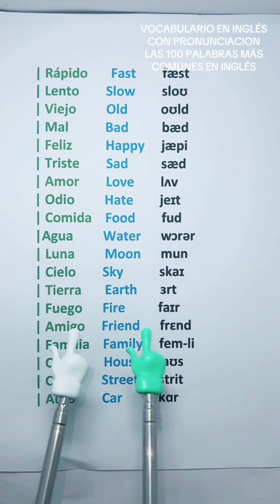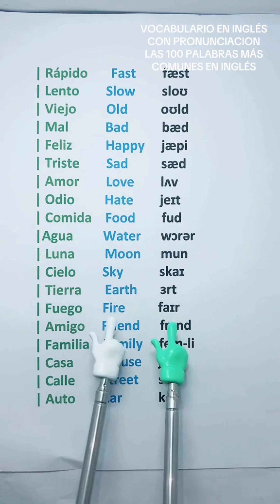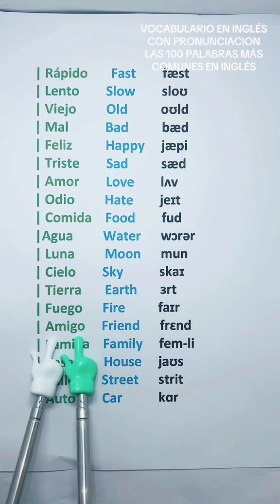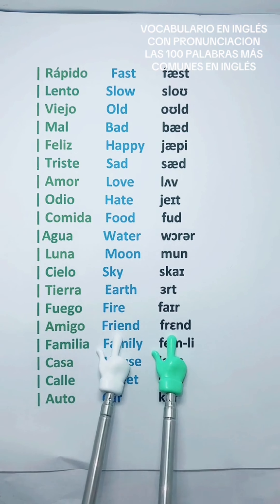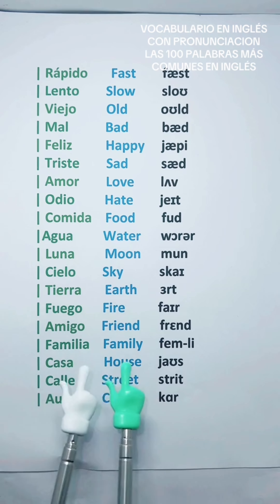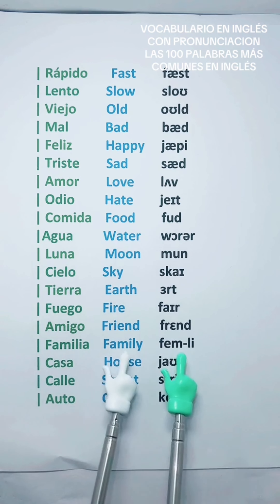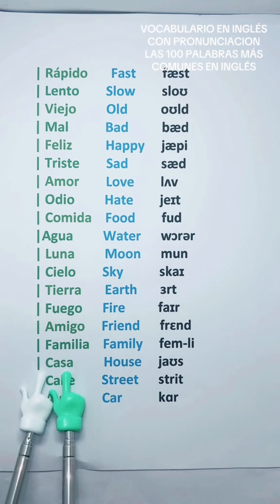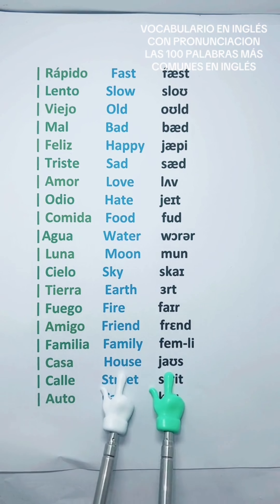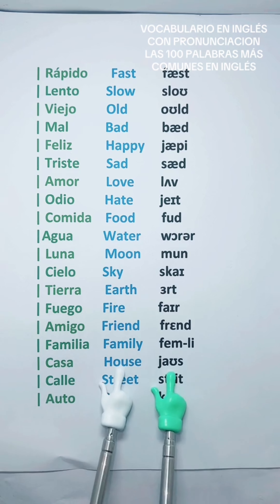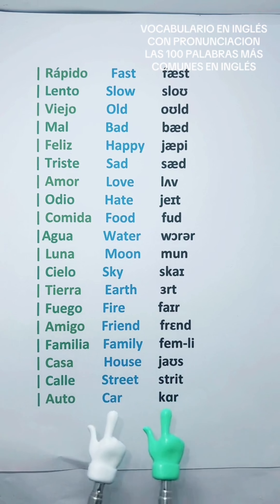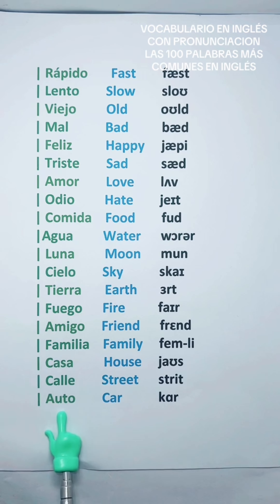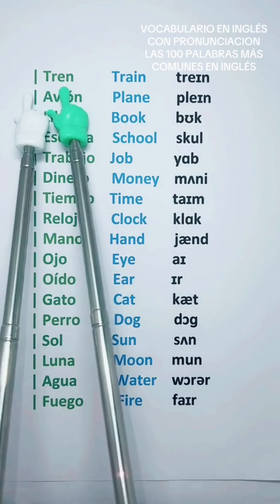Fuego — Fire. Amigo — Friend. Familia — Family. Casa — House. Calle — Street. Auto — Car.